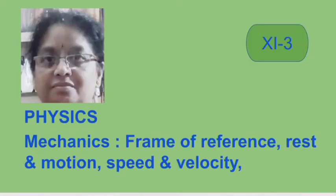There is one more important term — that is point object. An object is considered to be a point object if it covers distances much greater than its own size in a given time interval. Hence, we consider even the Earth or any other planet as a point object while considering its motion around the Sun. The concept of point object simplifies the problems mathematically.